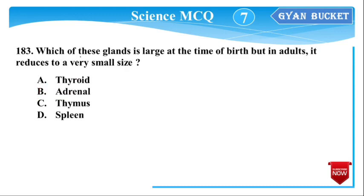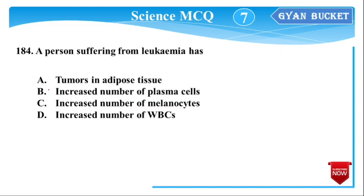Next question: Which of these glands is large at the time of birth but in adults reduces to a very small size? The gland affected is the Thymus gland. Option number C — this is the Thymus gland, which reduces in size as we age.